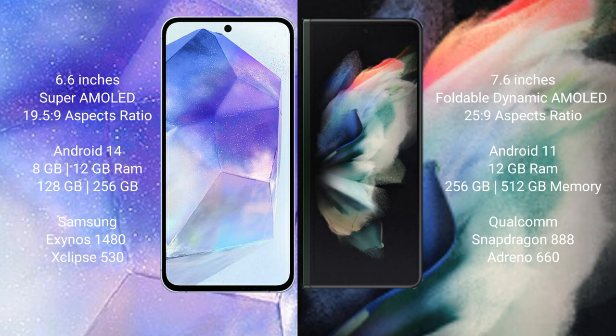The Samsung Galaxy A55 comes with 8GB or 12GB RAM and 128GB or 256GB internal storage. The Samsung Galaxy Z Fold 3 comes with 12GB RAM and 256GB or 512GB internal storage.